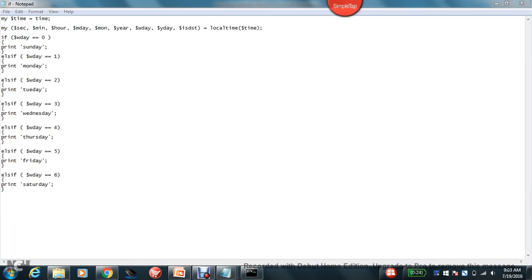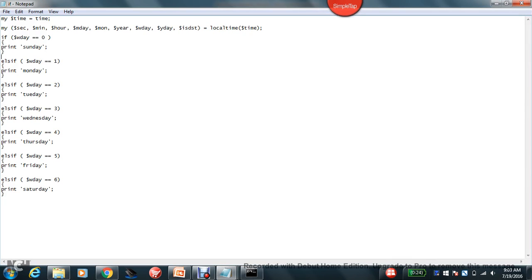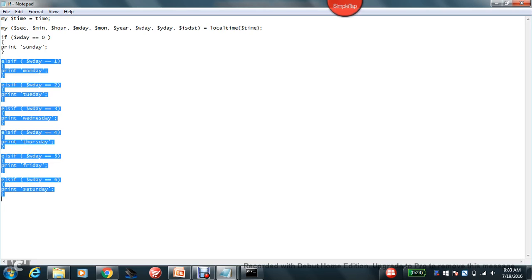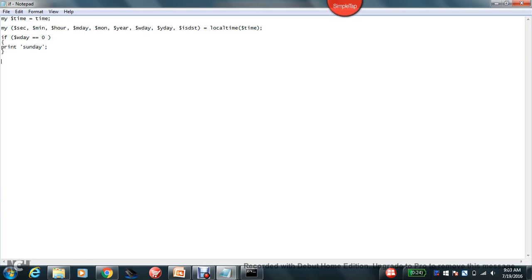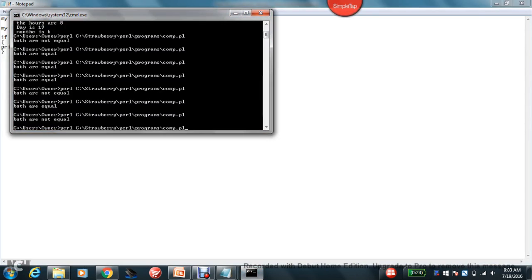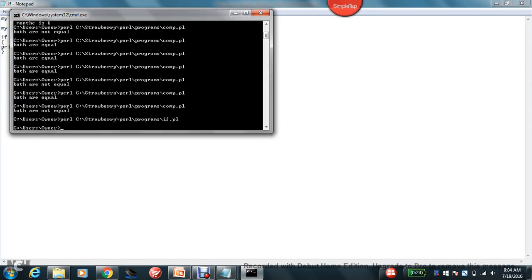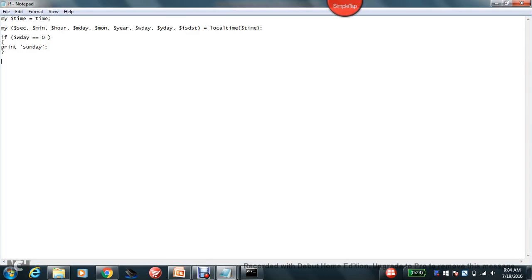So if it was a simple if, to start with a simple if, I can make this as, I can delete this and just save this and run this. Then I'm going to execute this. If weekday is equal to 0, so today is some other day, so it won't print, right?